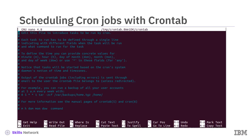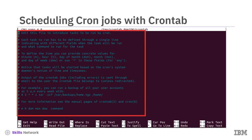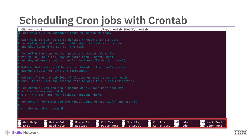Entering 'crontab -e' on the command line opens the default text editor. In this case, the default editor is GNU nano. Conveniently, instructions for setting up Cron jobs are included here as comments. Instructions for using the editor are also included, but you likely will only need Control+X in this context.